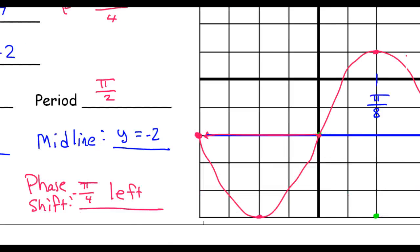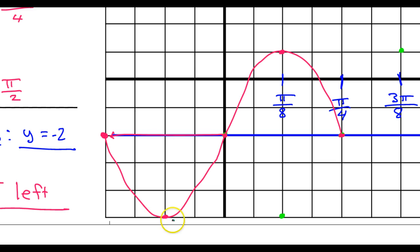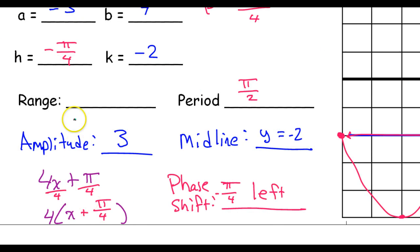The range from bottom to top. The lowest point here is negative 5. This is negative 5 down here. Negative 5 to 1. So, the range is from negative 5 to 1.